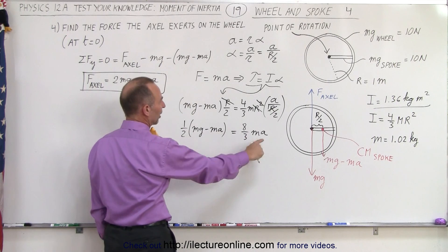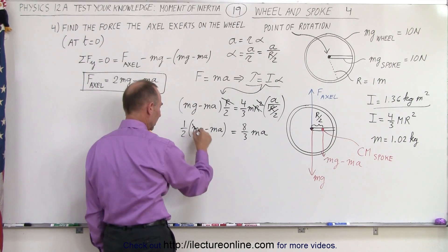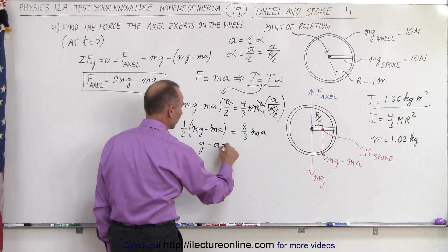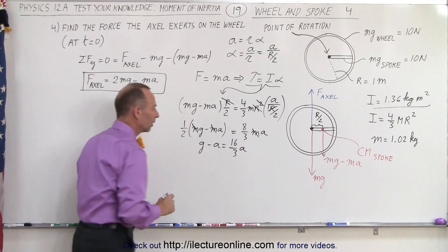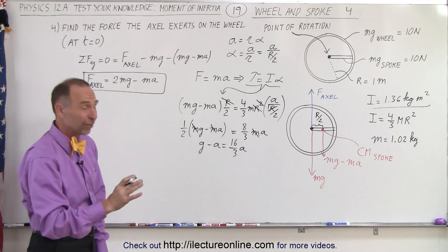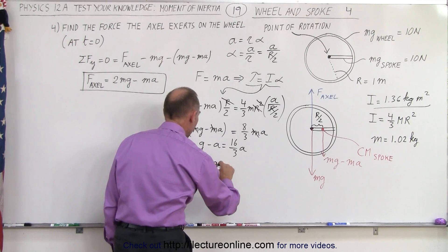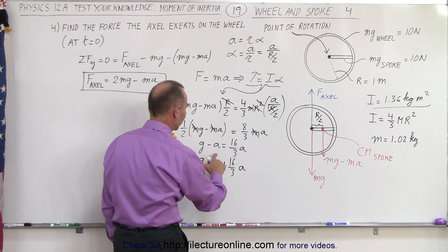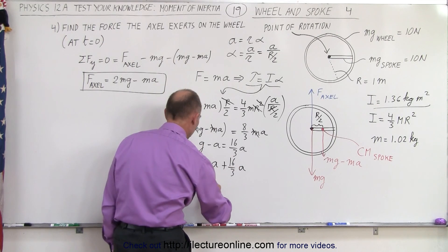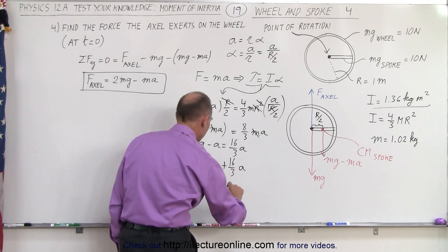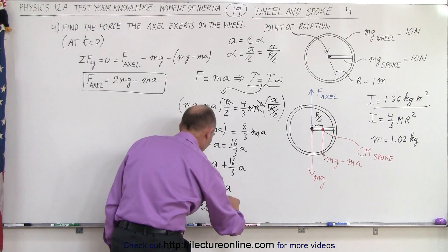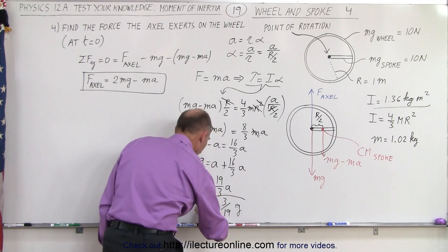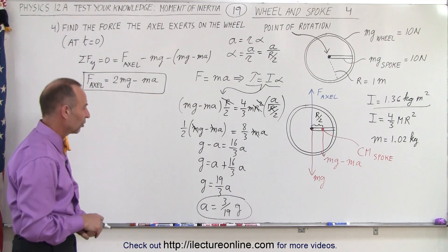We can multiply both sides by 2 and also cancel out the m's. So the m's cancel out, multiply both sides by 2, that gives us g minus a is equal to 16/3 times a. Or, putting all the a's on one side, we have g is equal to a plus 16/3a. That's 3/3 plus 16, or g is equal to 19/3a, or a is equal to 3/19 times g. There we go, a equals 3/19 g.